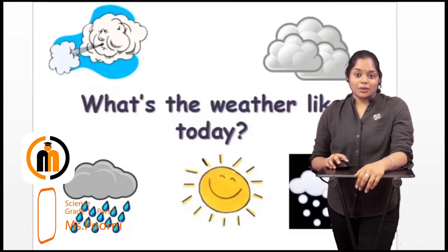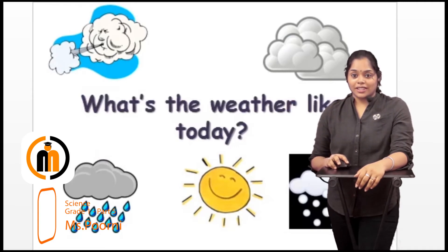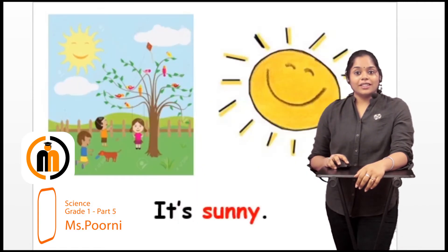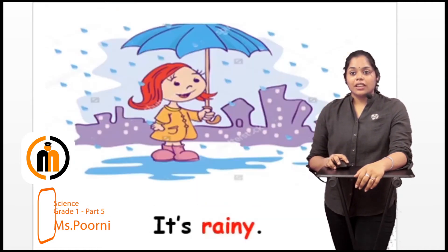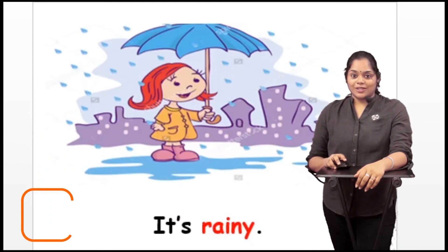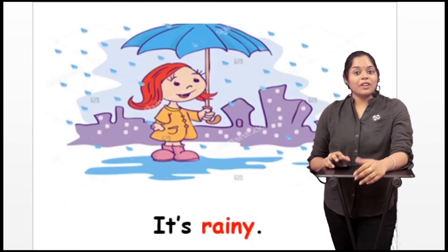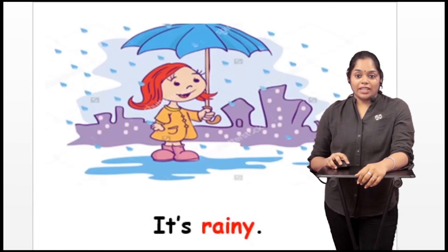Look around you and check what's the weather today. If it's sunny, the day must be very bright. If it is rainy, it must be very cold, dark and it must be raining around your place.